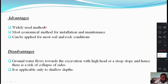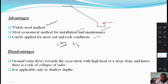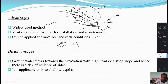The advantages of the ditch and sump method are: it is a widely used method, easy to understand and operate, most economical for installation and maintenance, and can be applied to most soils and rock conditions. However, for clayey soils with very low permeability, good discharge cannot be expected. The disadvantage is that groundwater flows toward the excavation with high head or steep slopes, creating a risk of slope collapse. It is also applicable only to shallow depths.